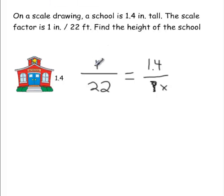So we have 1 over 22 equals 1.4 over x, and then whatever x is, that's going to be how tall this school is. Okay? And then we can cross multiply, right? 1 times x would be x. x would equal 22 times 1.4.